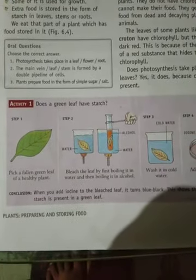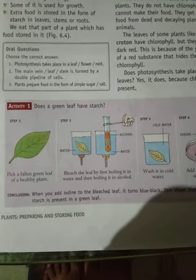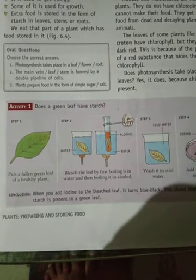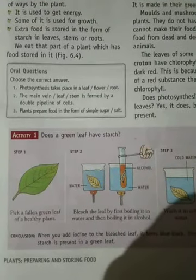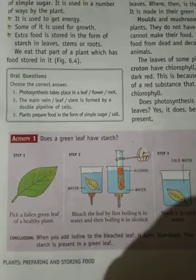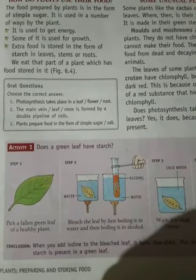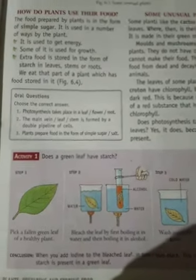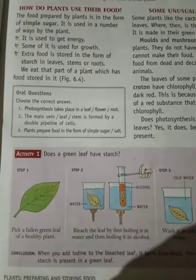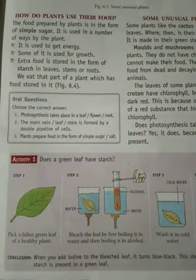This is Activity 1: Does a green leaf have starch? That means, is it possible to have starch in a green leaf? Step 1: First of all, you have to take a fallen green leaf. The leaf must be a healthy one from a healthy plant, such that we can ensure the tree is capable of preparing food. That means photosynthesis is possible in that particular plant.